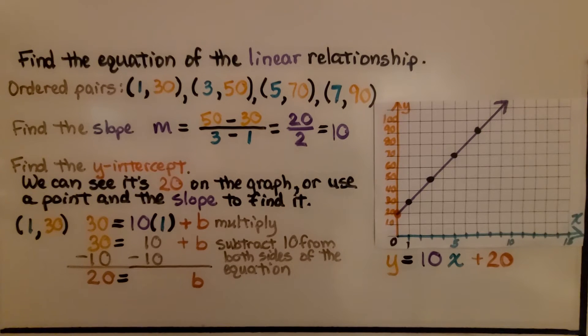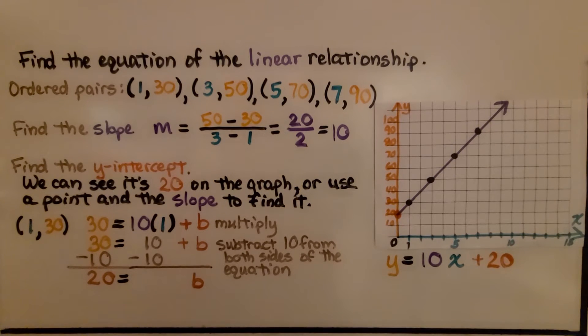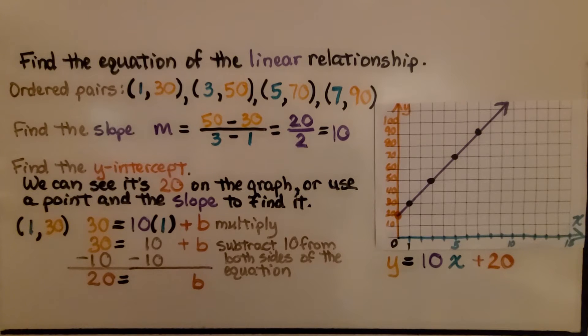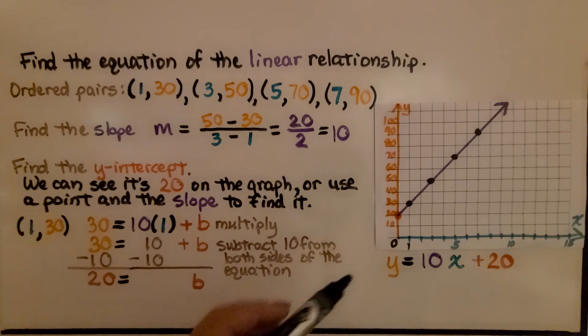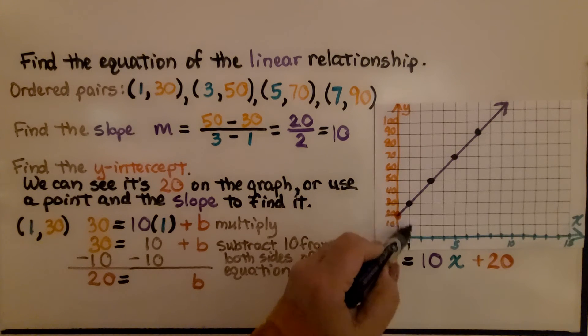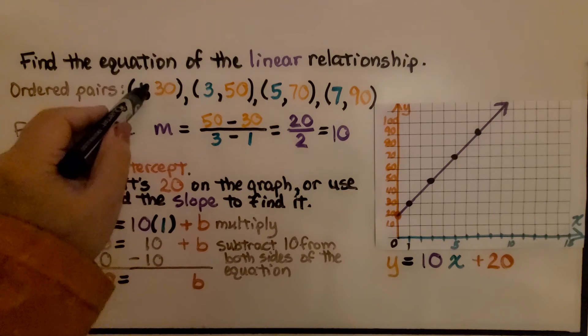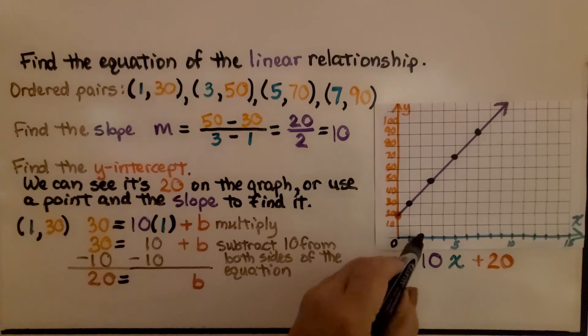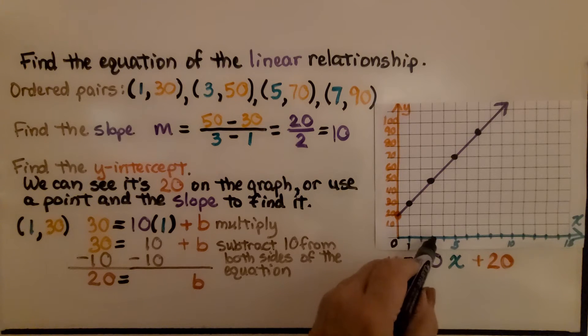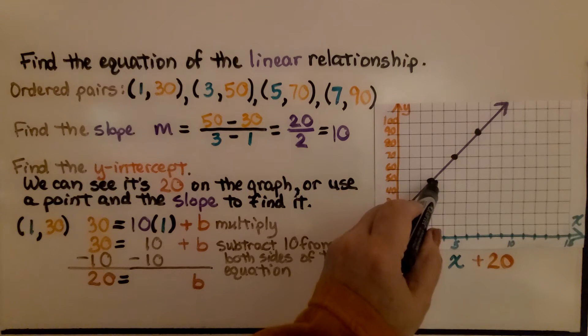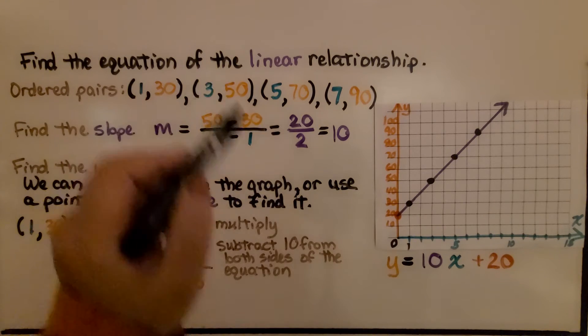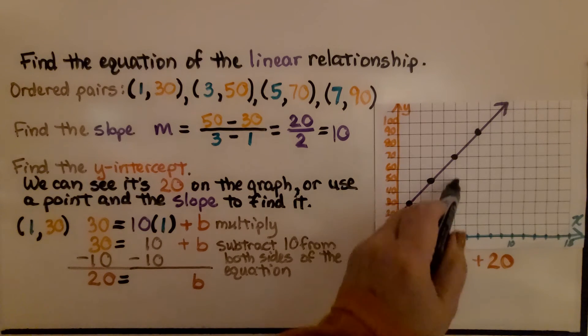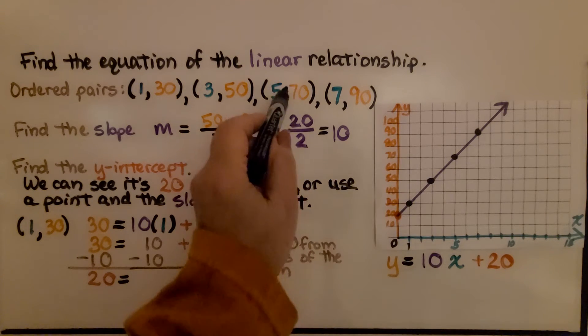Here we have a graph and it's telling us to find the equation of the linear relationship. First thing we do is identify the ordered pairs. For the first point, we have 1,30. For the second point, if this is 1, that's 2, 3, 4, 5, that means that's 3 for x and 50 for y. The next point is 5 for x and 70 for y.